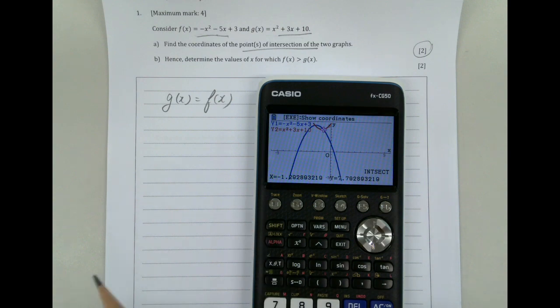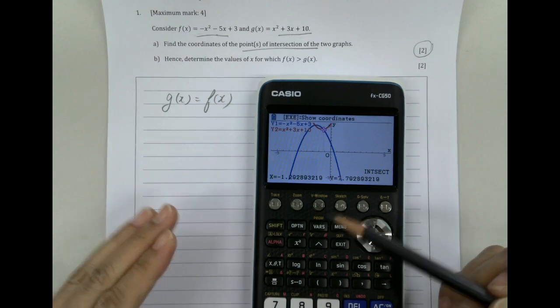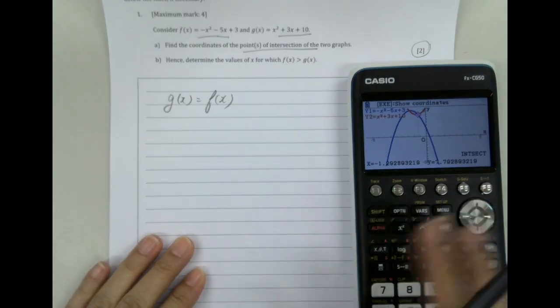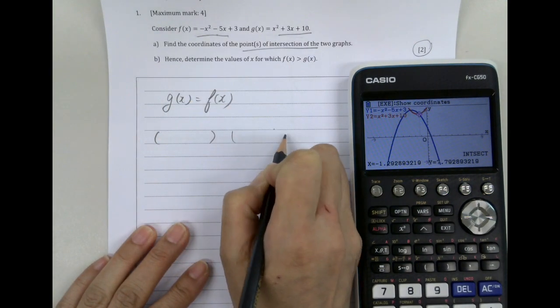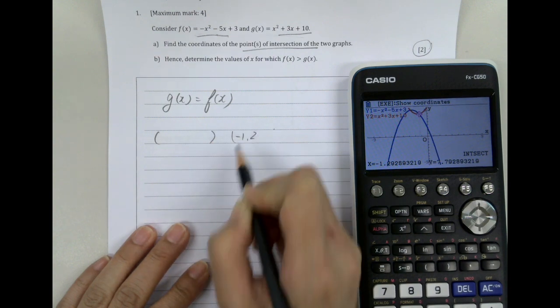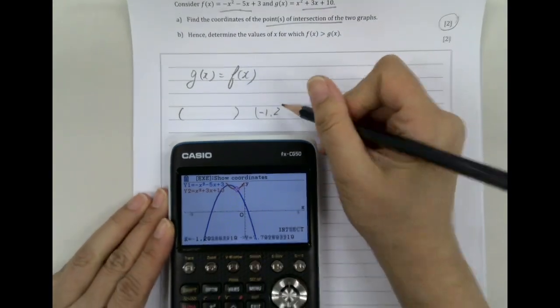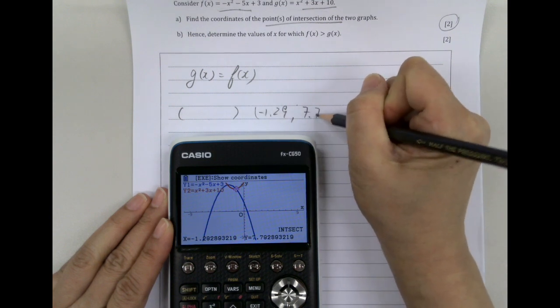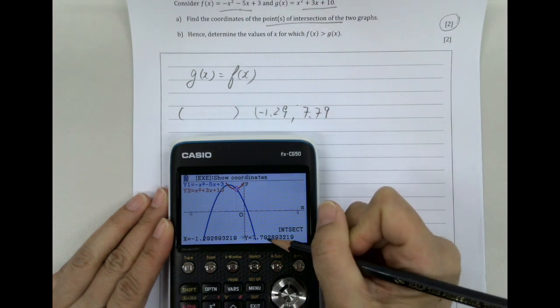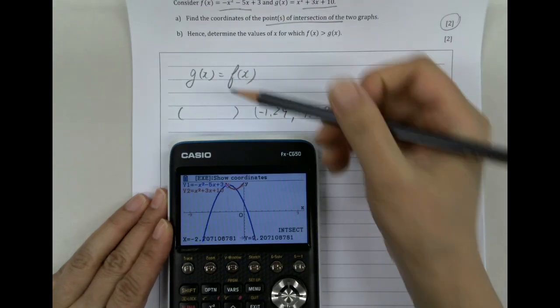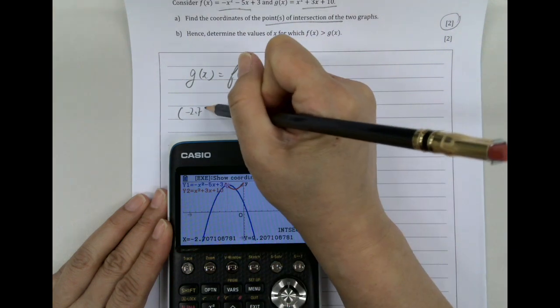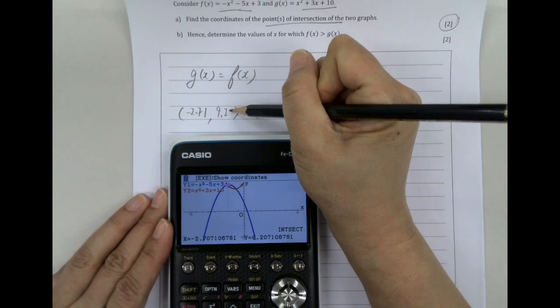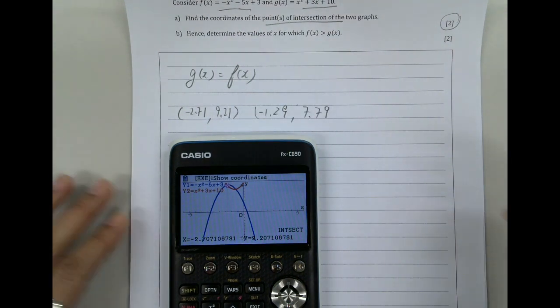Remember, IB paper is always working with three significant figures unless it's specified. You can be more accurate, but then you cannot be less. So all you need to do is just copy the answer there. So the intersecting point, we got the two points: negative 1.29 and 7.79. The next point, negative 2.207, so we have to add one in, 2.01 and 9.21. Easy two points.